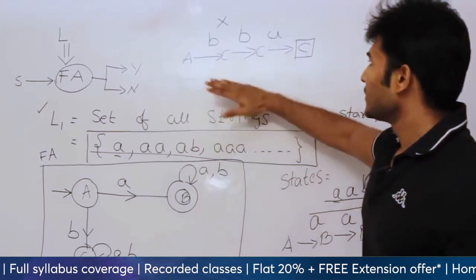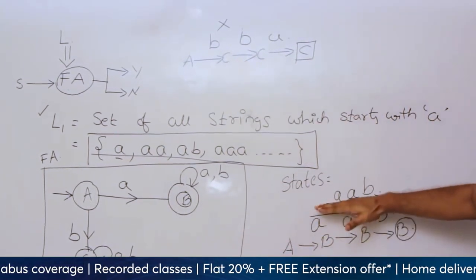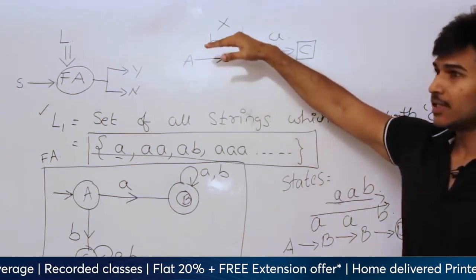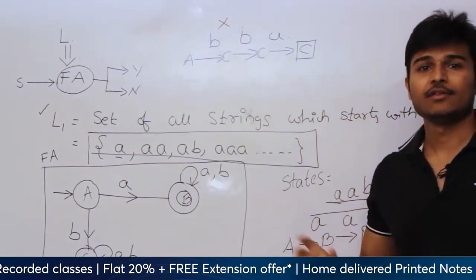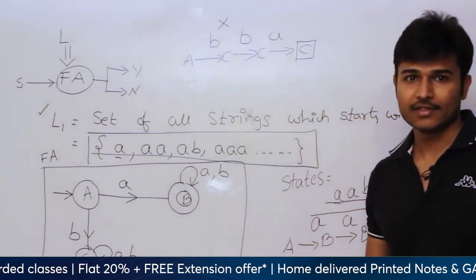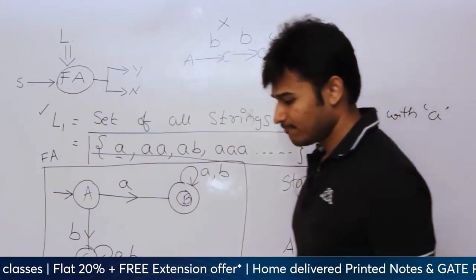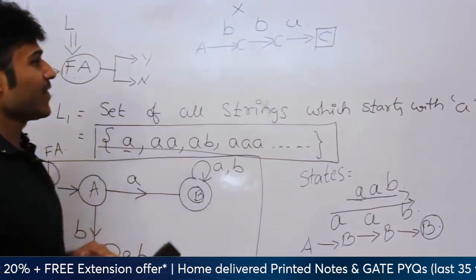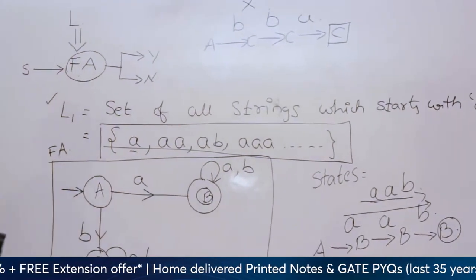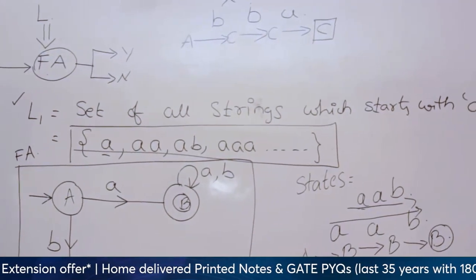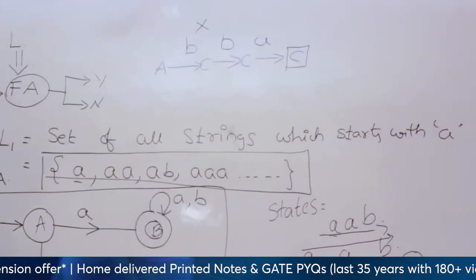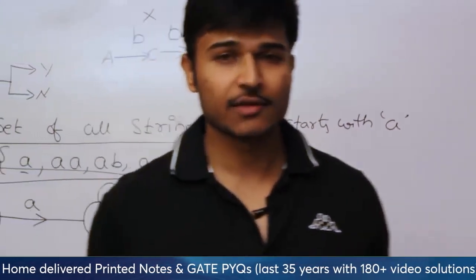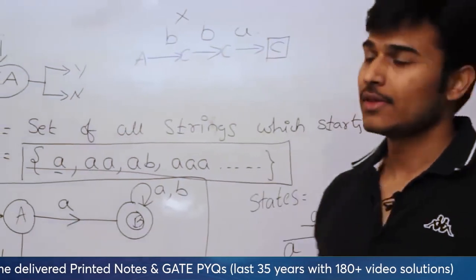So the string AAB is in the language and the string BBA is definitely not in the language. I have given you something about a finite automata. Now, what is a finite automata? What are the various kinds of finite automata and what are the definitions? We shall look at them one by one.